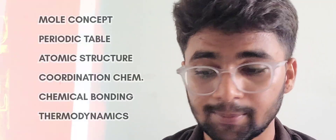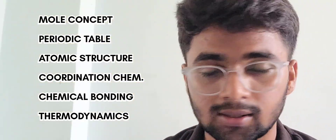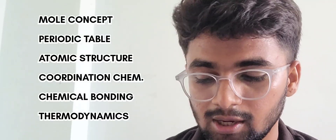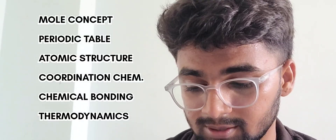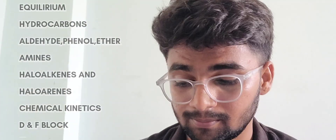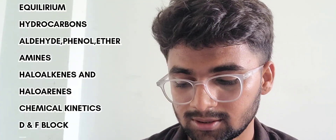Without wasting any time, let's begin. I'm going to tell you the 13 most important chapters of chemistry. First is mole concept, second periodic table, third atomic structure, fourth coordination chemistry, fifth chemical bonding, sixth thermodynamics. Please do not skip coordination chemistry and thermodynamics — you will definitely find a question from coordination chemistry. Seventh is equilibrium, eighth hydrocarbons, ninth aldehyde, phenol and ether.